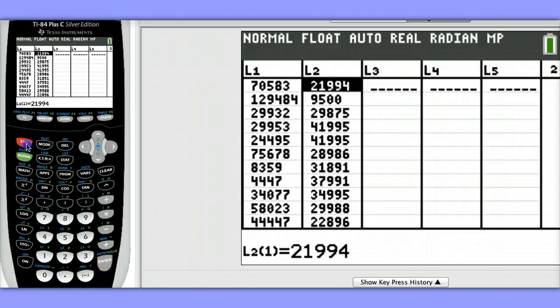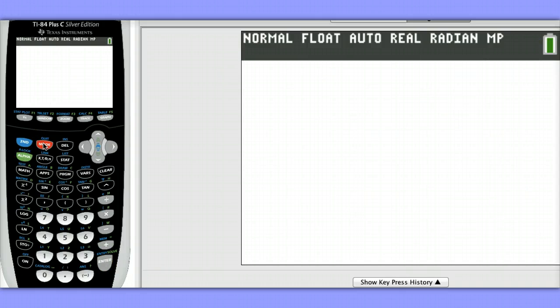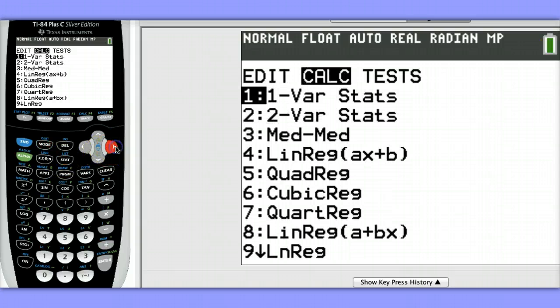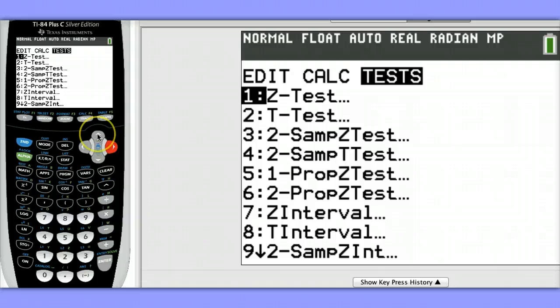To do this, hit 2nd mode to quit out of this screen and get back to the home screen. Then, hit Stat, go over to Test, and scroll to the very bottom.